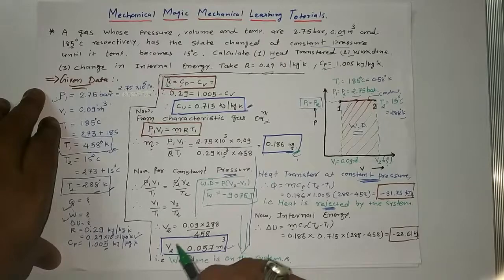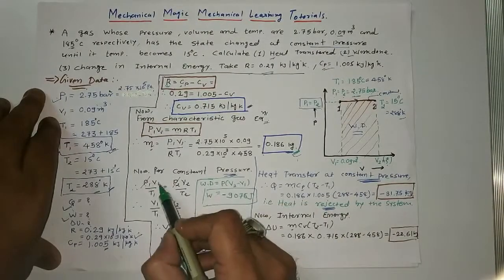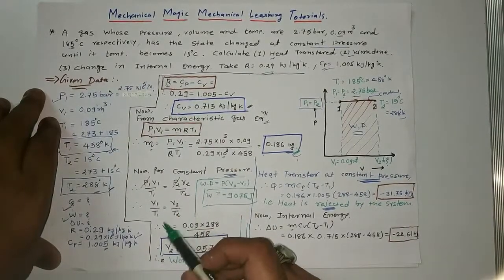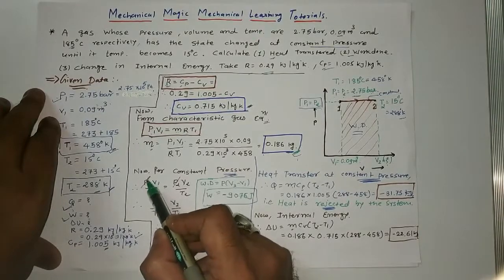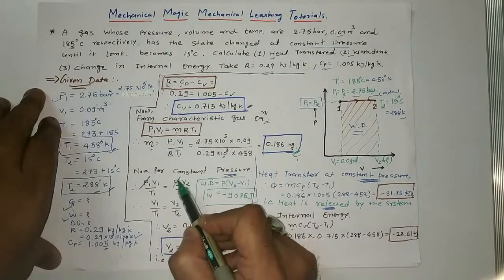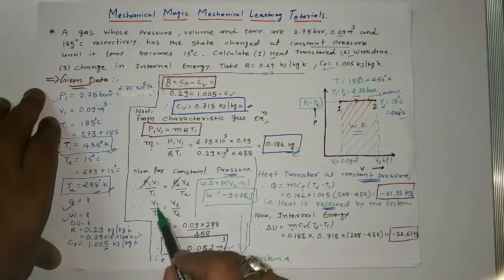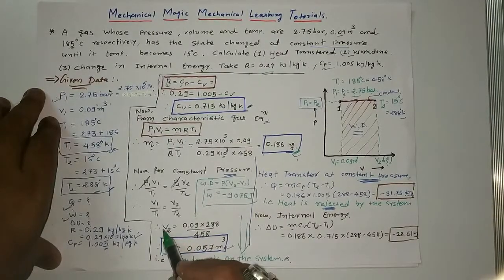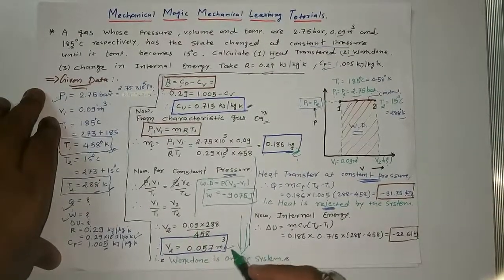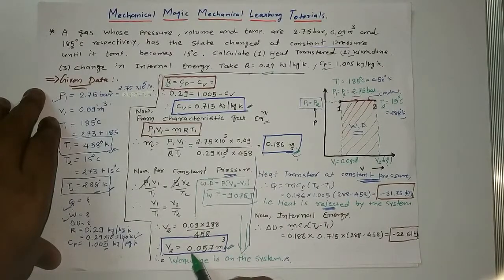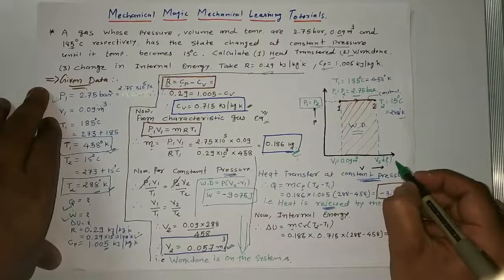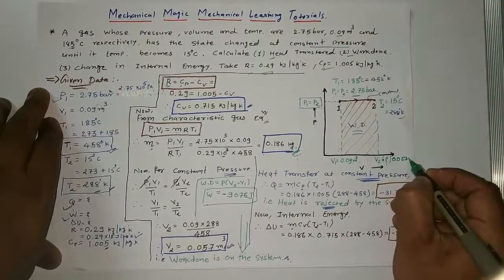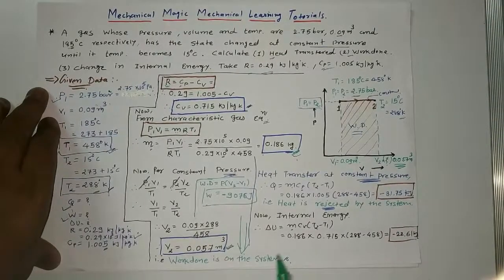For the constant pressure process, applying the combined gas law P1 V1 over T1 equals P2 V2 over T2. Since P1 equals P2, this simplifies to V1 over T1 equals V2 over T2. Solving for V2 and substituting the values, we get V2 equal to 0.057 meter cube.